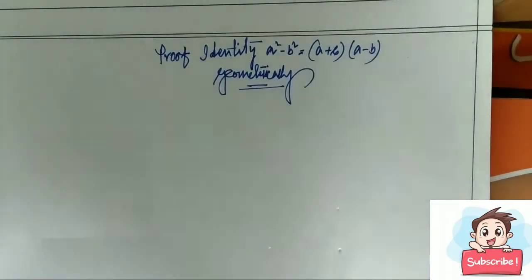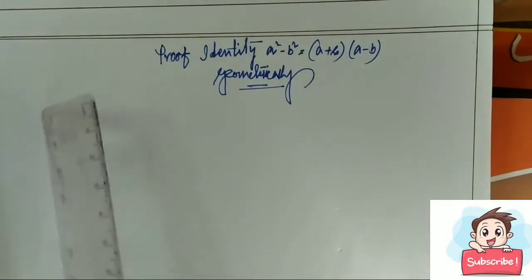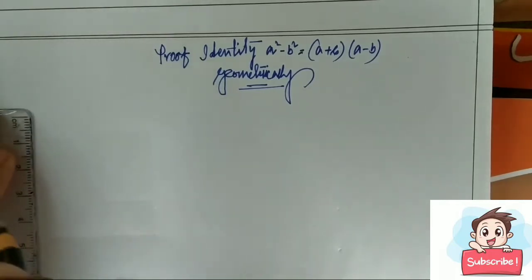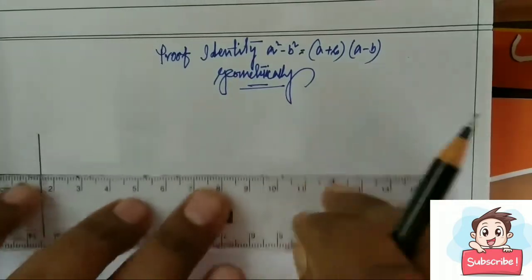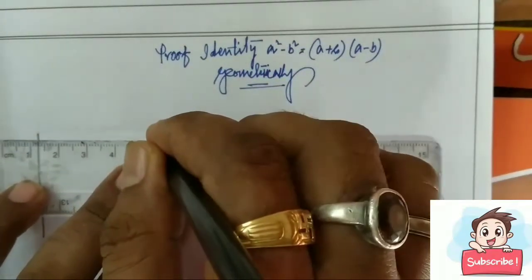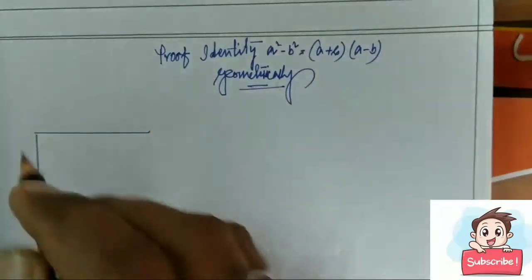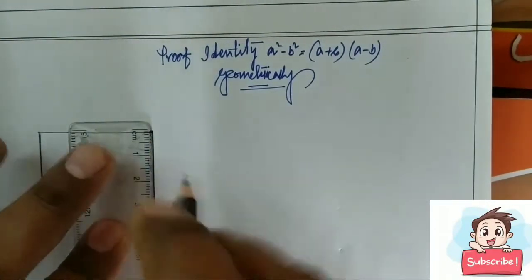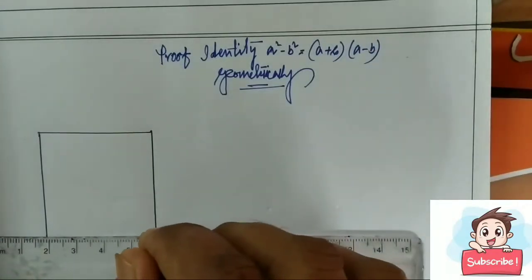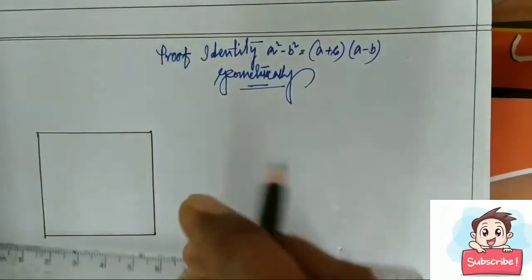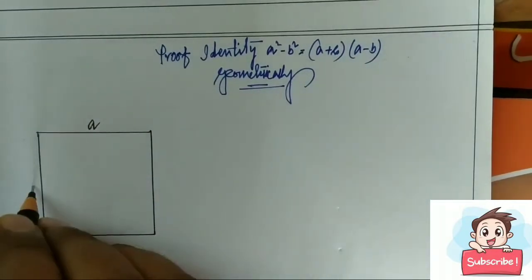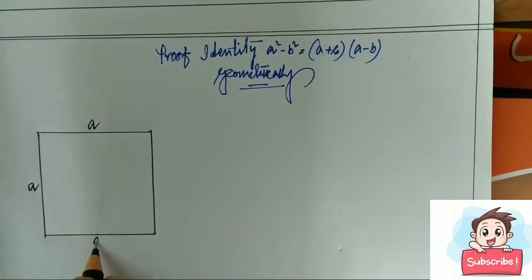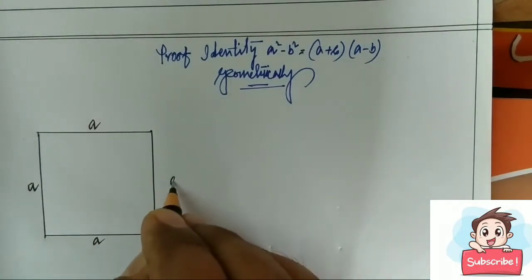What is the meaning of a square? If we draw a square with side a, this one is a, this one is a, here and a.